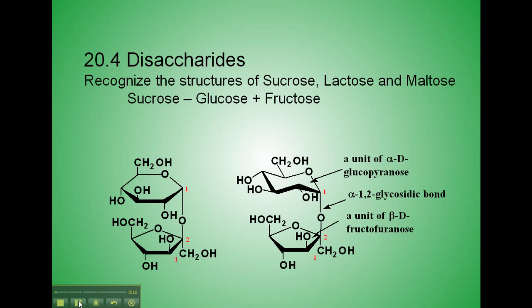Sucrose, sometimes called sugar, is composed of glucose and fructose. Here are two structures representing sucrose. This top ring, a six-membered ring, is glucose, and the five-membered ring at the bottom is fructose.